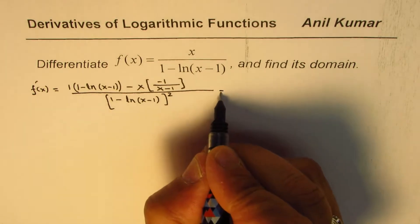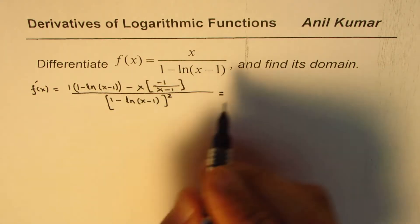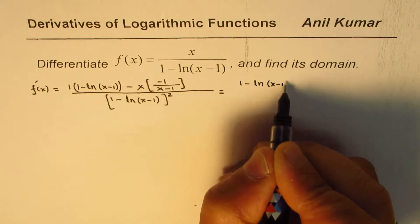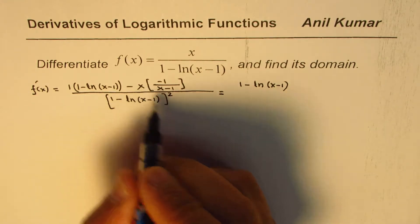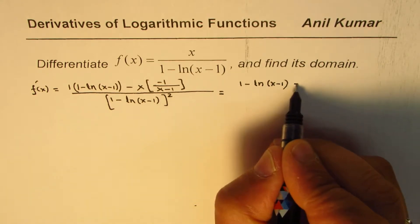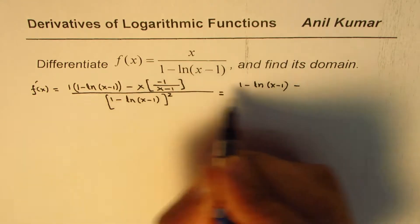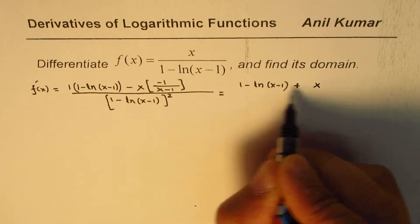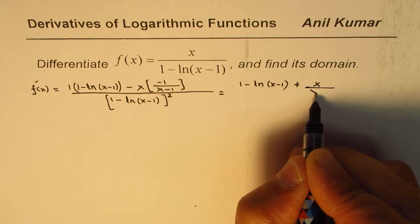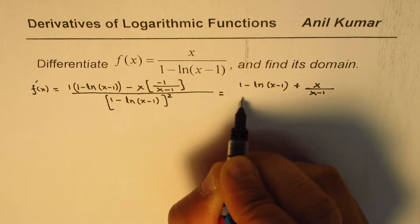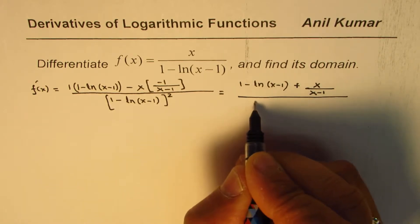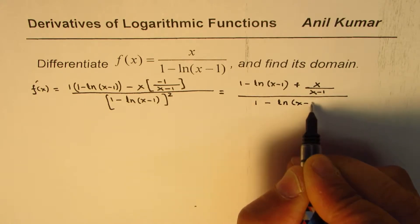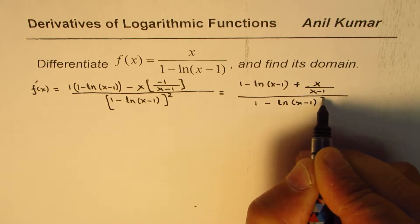So I could write this as (1 minus ln(x minus 1)), and here we have minus — x minus minus becomes plus — x over (x minus 1), divided by (1 minus ln(x minus 1)) whole square.